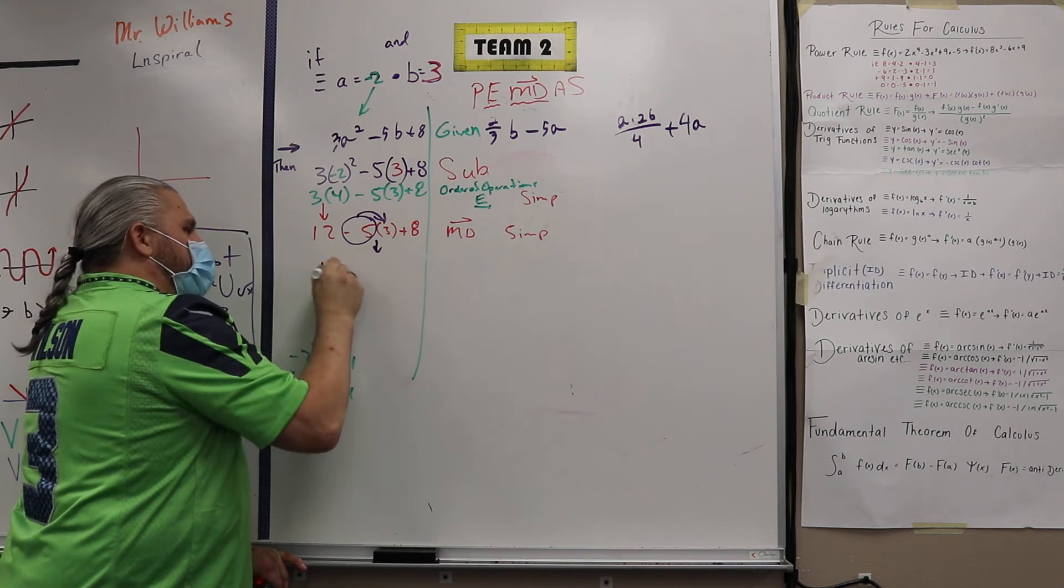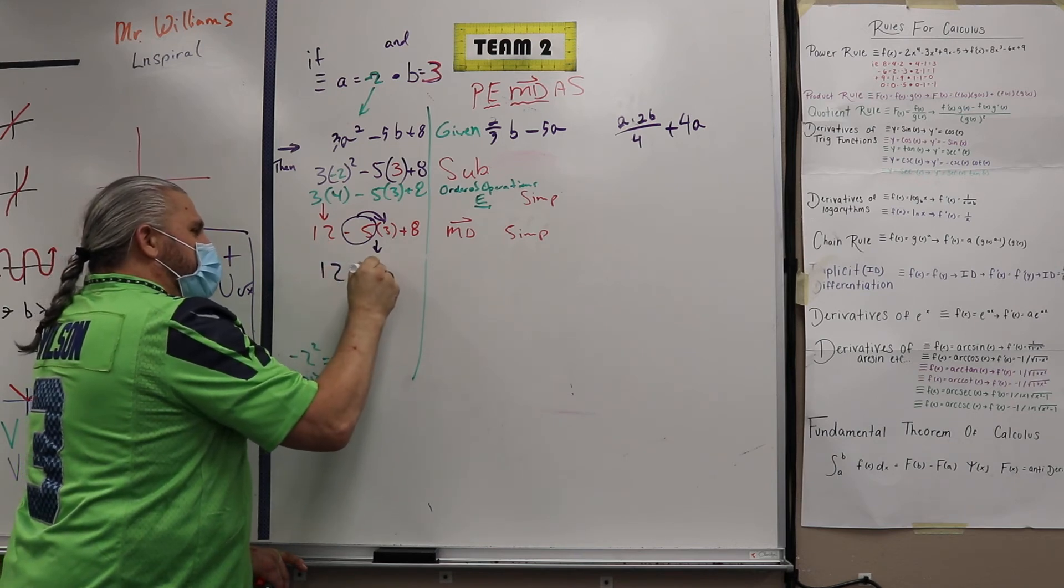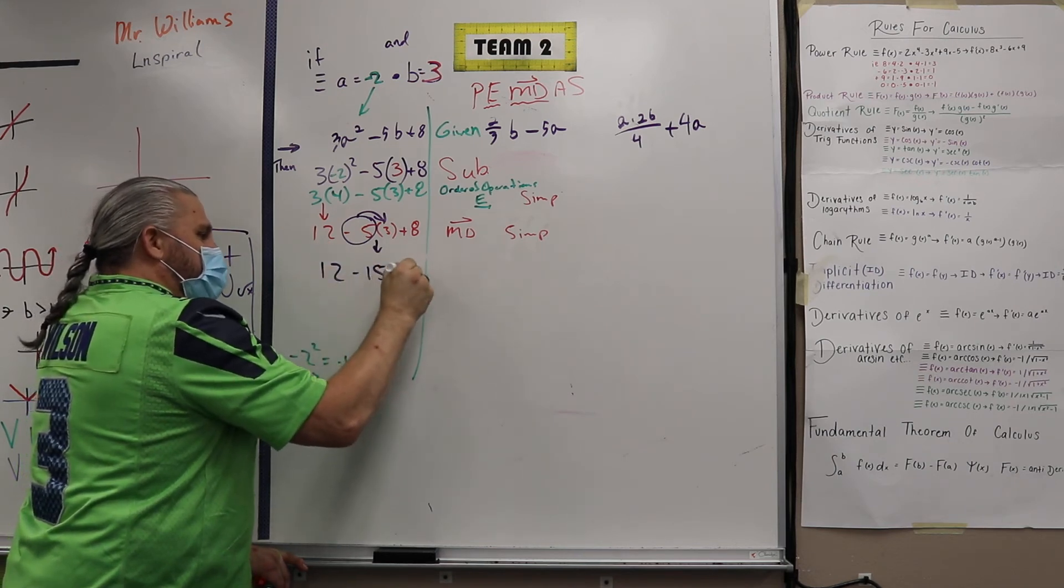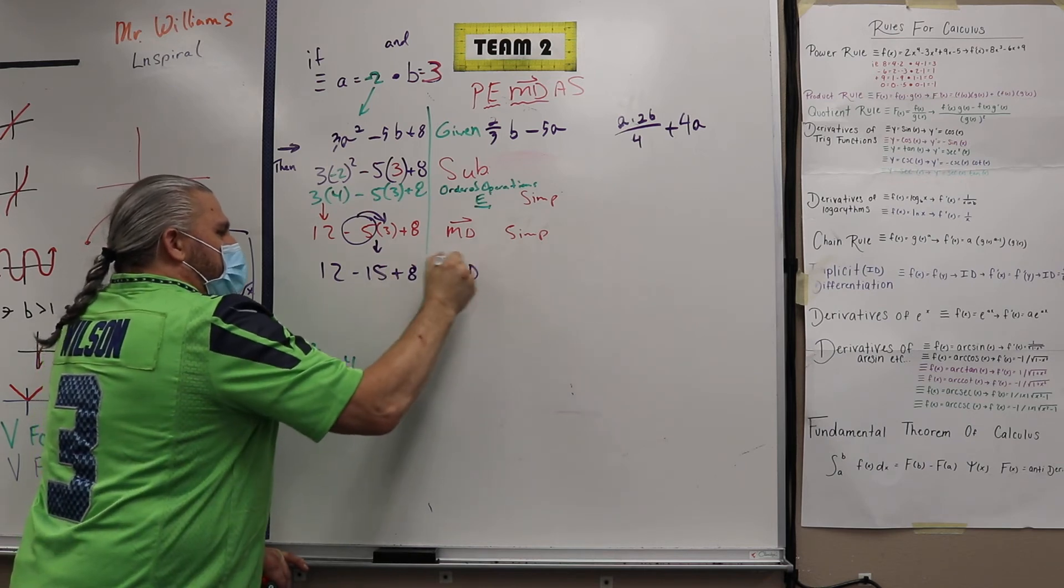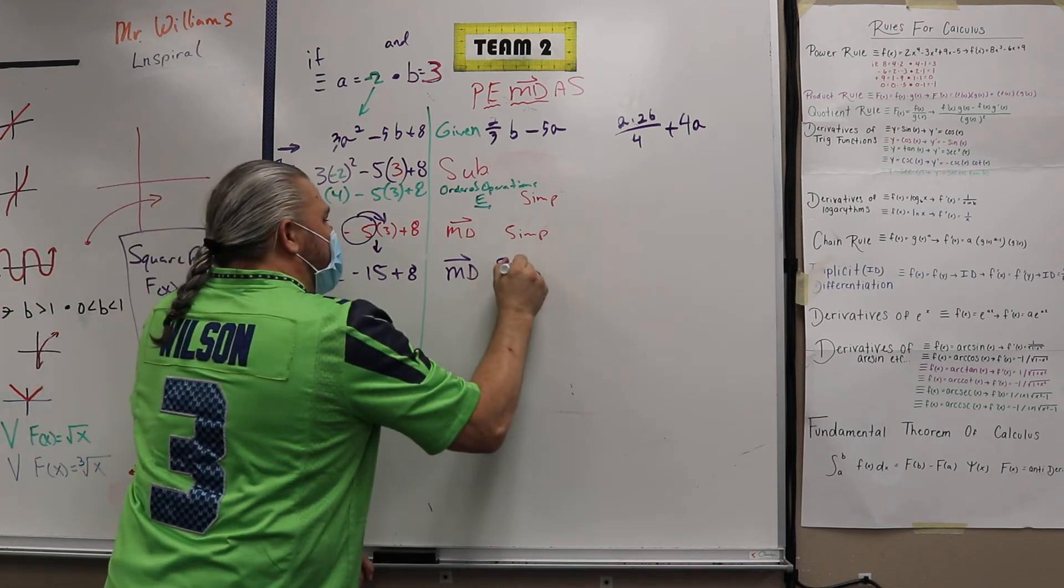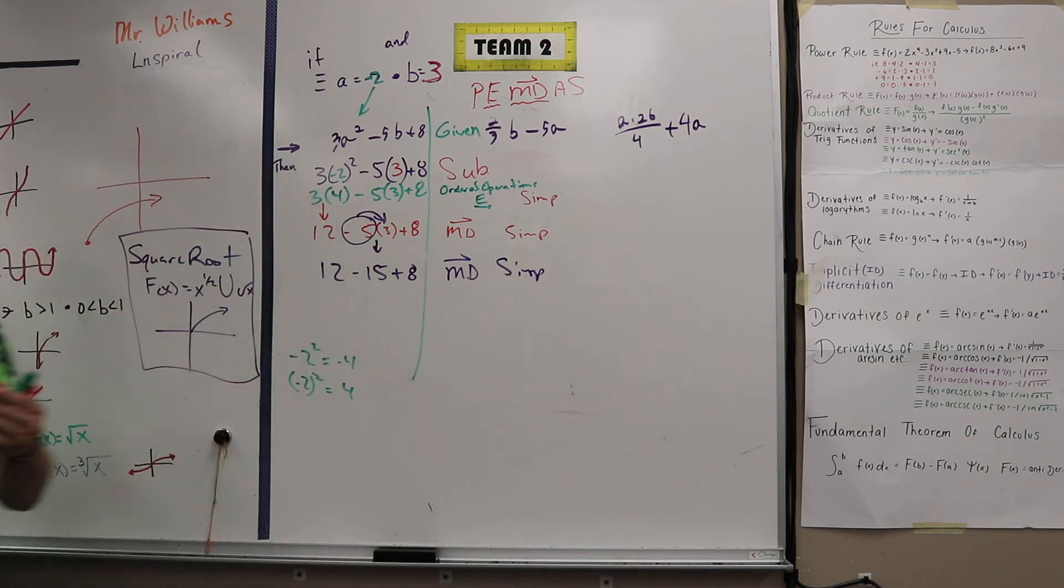So that stays with him. So that's 12 minus 15, right? And again, MD from left to right, or simplifying. Then what?